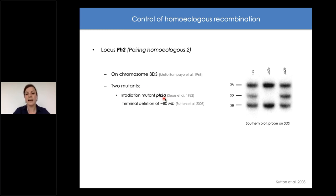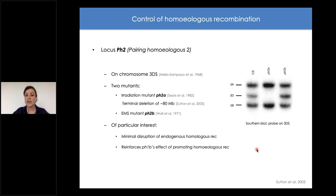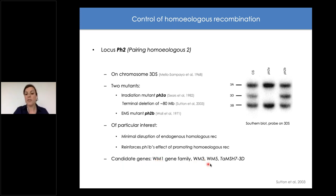The PH2 locus is of great interest because it induces minimal disruption of endogenous homologous recombination and reinforces the PH1b effect of promoting homeologous recombination, making it useful in pre-breeding schemas. Despite several attempts over the last decades, no causative gene had been identified, though a few candidates were proposed including the WM1 gene family — WM3, WM5 — and the MSH7-3D gene.